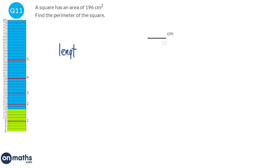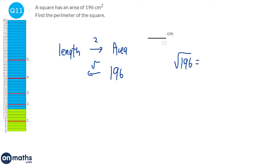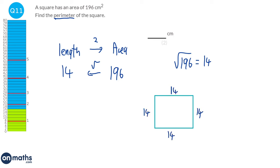To get from the length of a square to the area, we square the length. To work backwards, we square root — because the inverse of squaring is square rooting. We've got an area of 196, so we square root it to find the length. The square root of 196 is 14, which you should know from learning square numbers 1 to 15. The perimeter of a square with side 14 is 14 times 4, which is 56.